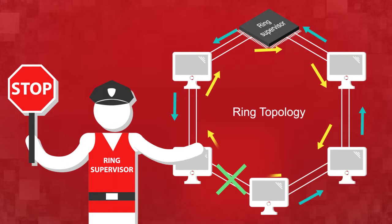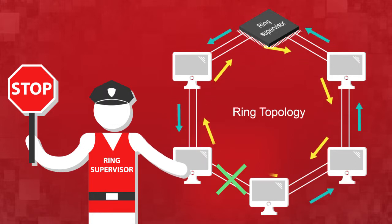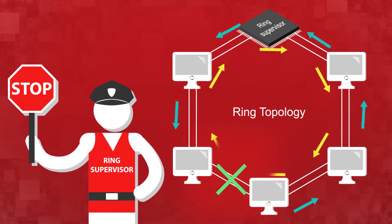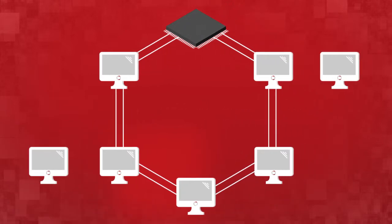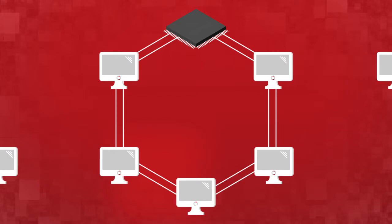When there's a problem like a bad cable, the supervisor detects the issue and directs traffic down the alternate path. Further, even while business is running as usual, a ring topology allows you to switch out cables or devices.